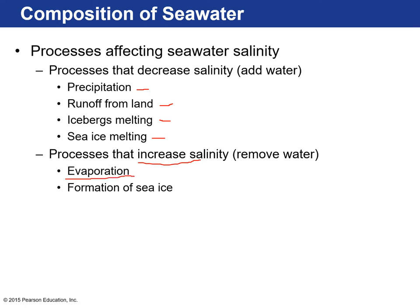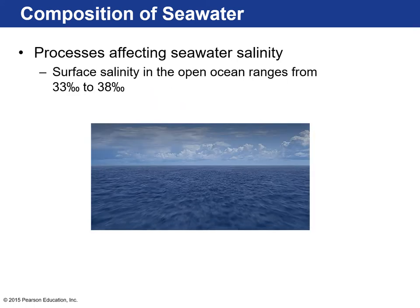The only two processes that increase salinity are evaporation — water molecules converting from the liquid phase to the vapor phase, leaving behind dissolved solids in the remaining water, making it more salty — and when sea ice forms, which removes fresh water from the ocean and locks it up as ice, so the remaining ocean water becomes saltier.